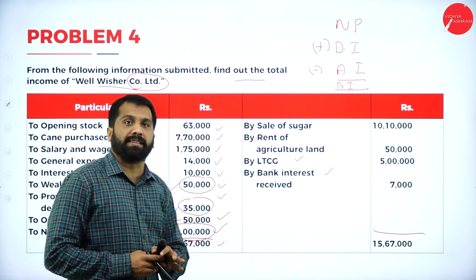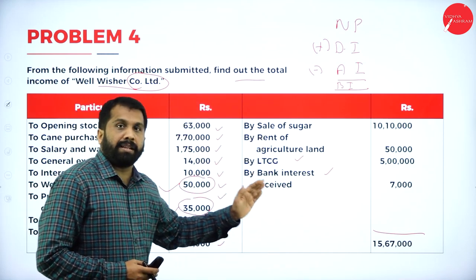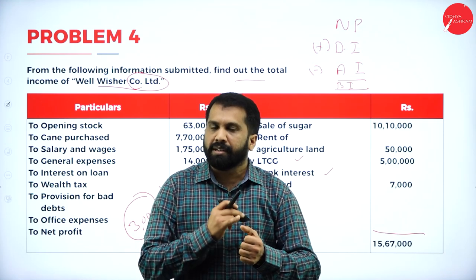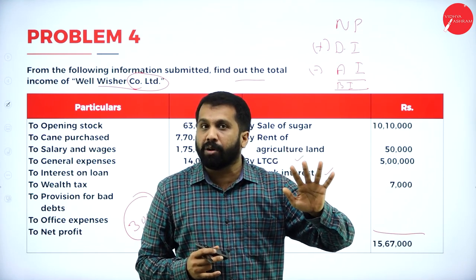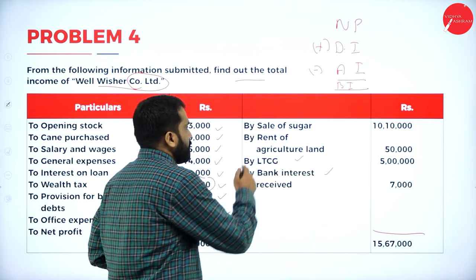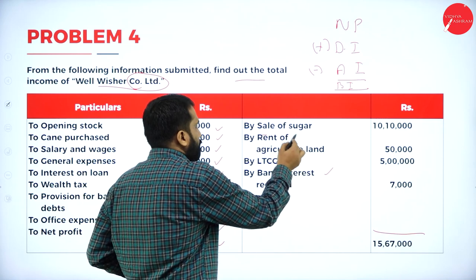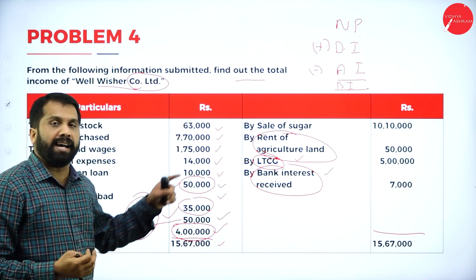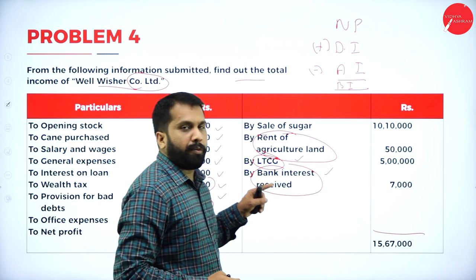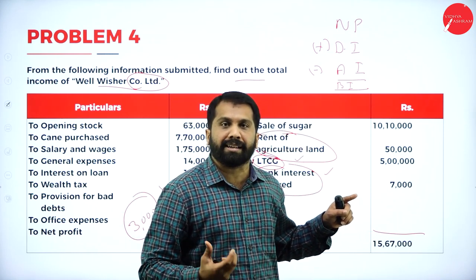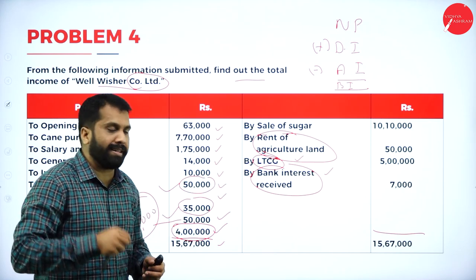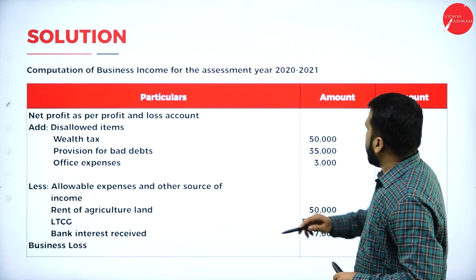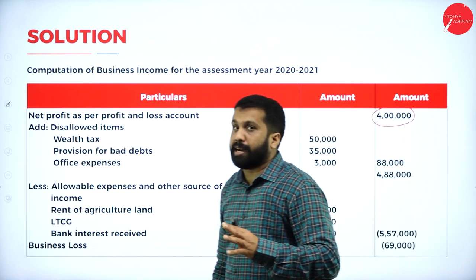Which are allowed items? Other than your business-related income: come to the credit side. Anything like long-term or short-term capital gain, agriculture income, interest, lottery, house rent — all come under allowed items; you are supposed to minus these. Sale of sugar is part of the business. Rent of agricultural land — yes. LTCG — yes. Bank interest — yes. These three items are other-source income and we are supposed to minus them. Net profit as per P&L: 4 lakh, already given in the question paper.